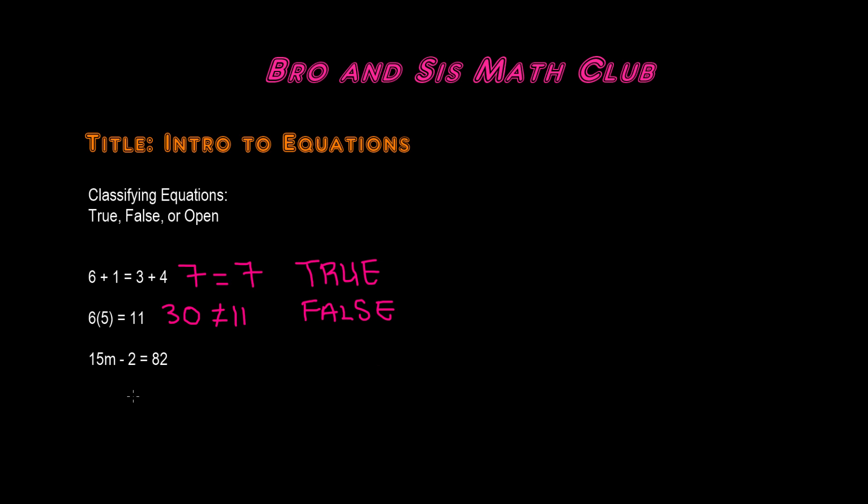The last equation has a variable in it. 15m minus 2 is equal to 82. If an equation has a variable in it, then it's an open equation.